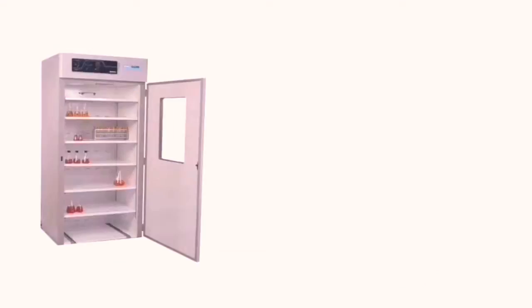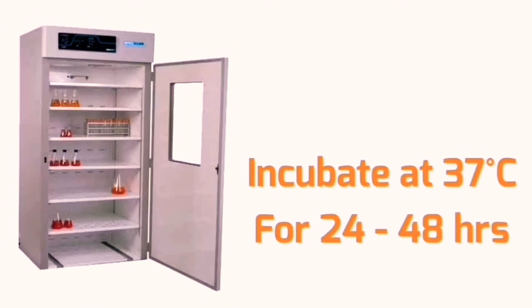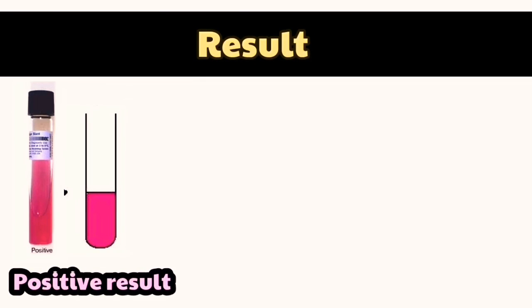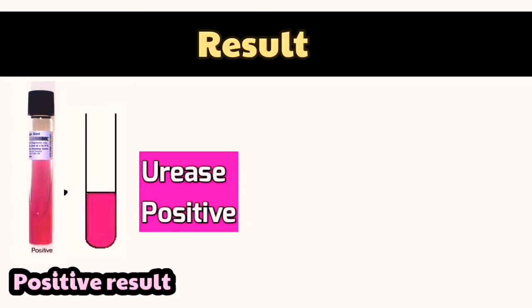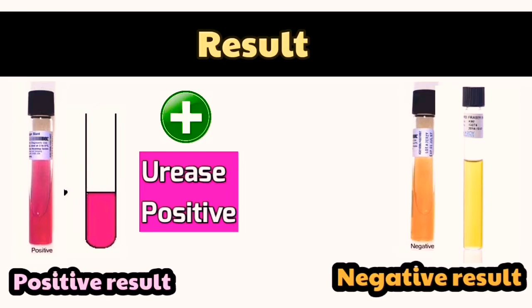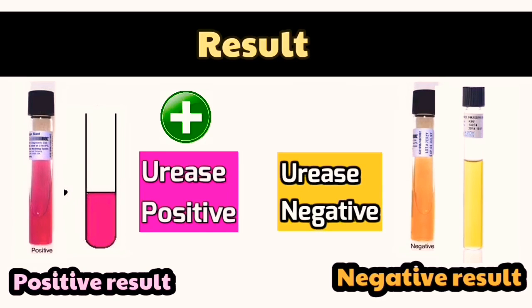If it gives you pink color, that means urease enzyme is produced and urea is converted into ammonia that raises the pH to alkaline and appears pink. If the color doesn't change and appears yellow, that means urease is negative and urea didn't convert into ammonia.